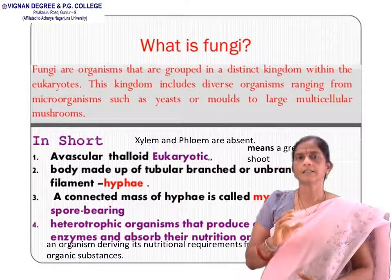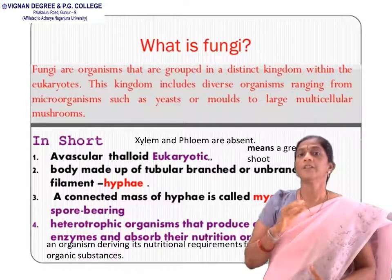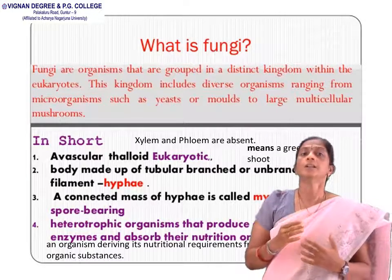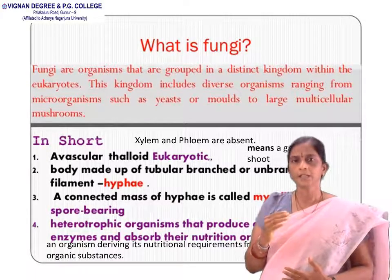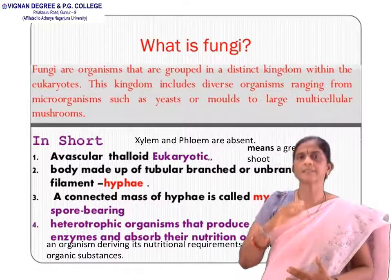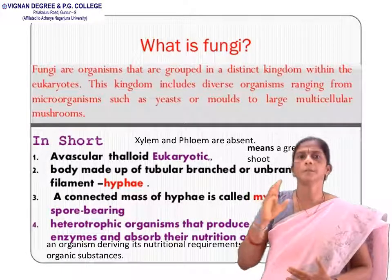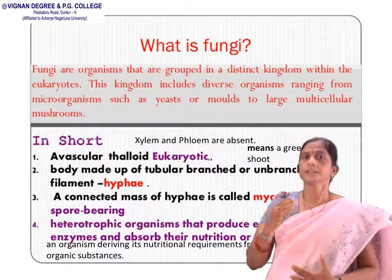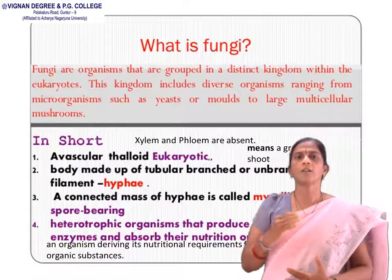Fungi are organisms that are grouped in a distinct kingdom. They are kept in a separate kingdom within the eukaryotes. Eukaryotes means the organisms which have a true nucleus. This kingdom includes a diverse group of organisms ranging from microorganisms such as yeast or mold to large multicellular mushrooms. In short, they are avascular thalloid eukaryotic organisms.